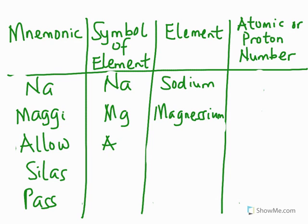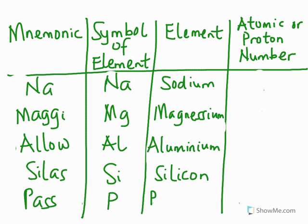Then Al, Aluminium. But here you will pronounce it as Aluminum. But in Nigeria we say Aluminium. Silas, Silicon, Si. Silicon, that is a semiconductor. P, Pass, Phosphorus. This is eleven, twelve, thirteen, fourteen, fifteen.